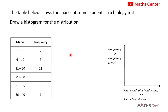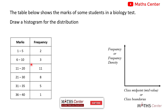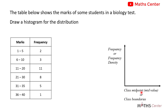We have learned that for a histogram drawn for grouped data, on the horizontal axis you may have the class midpoint, class midvalue, or class boundaries. On the vertical axis, you may have the frequency or the frequency density. The first thing to check is whether the class size or class width is the same for all intervals. If it is the same, you use frequencies on the vertical axis. If not, you use frequency densities.